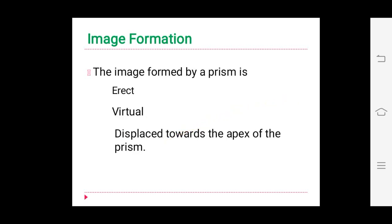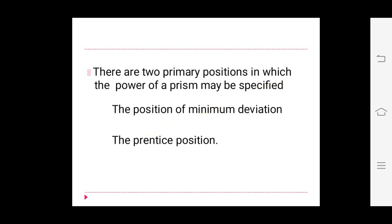The image formed by a prism is erect, virtual, and displaced towards the apex of the prism. There are two primary positions in which the power of a prism may be specified: the position of minimum deviation, and the Prentice position. The power may be specified either in degrees or in diopters.